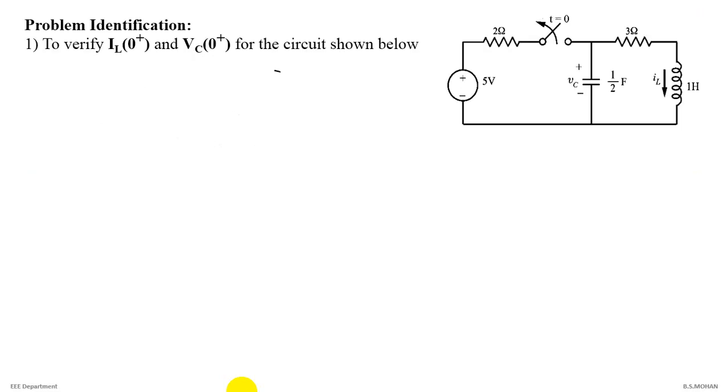Let's move on to theoretical calculations. For the given circuit, we have to find the current through inductance at 0 plus and voltage across capacitance at 0 plus. That is when the switch is opened at time equal to 0, what is the current through inductance 1 Henry and the voltage across capacitance 1 by 2 Farad. We are well aware from the derivation in theory classes that IL(0-) is equal to IL(0+). Similarly, VC(0-) is equal to VC(0+).